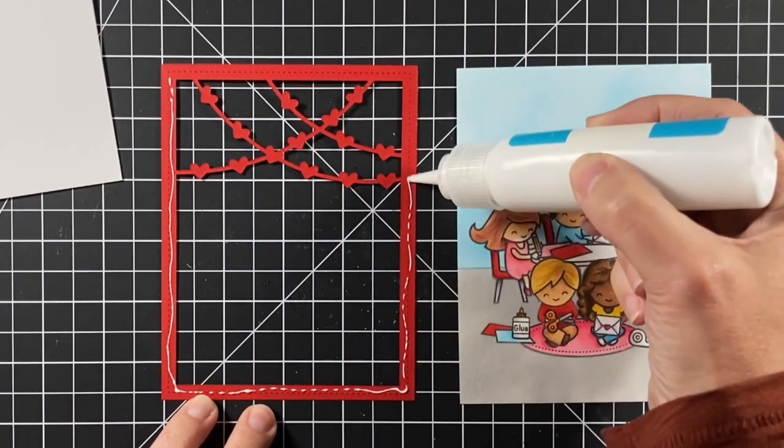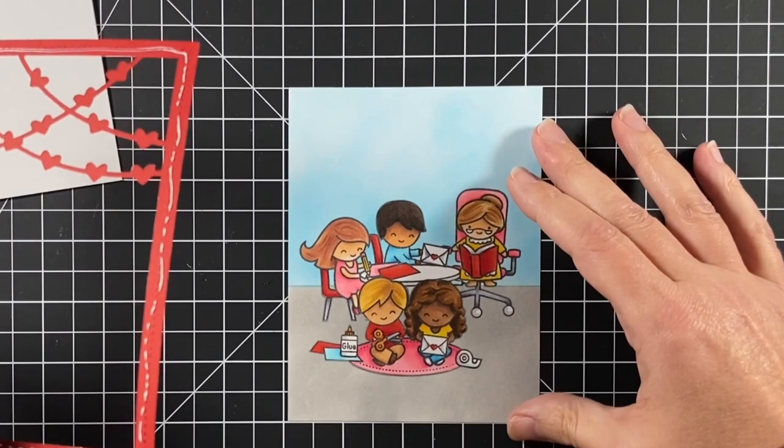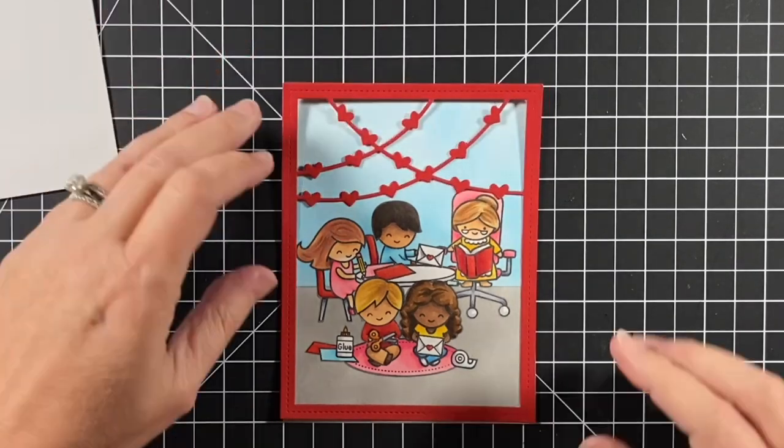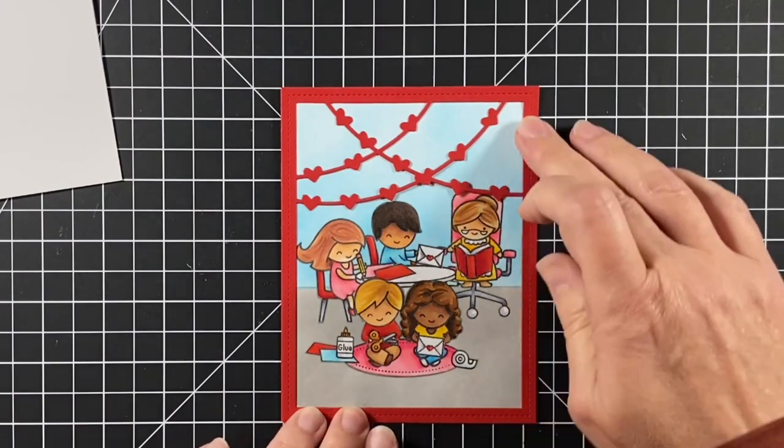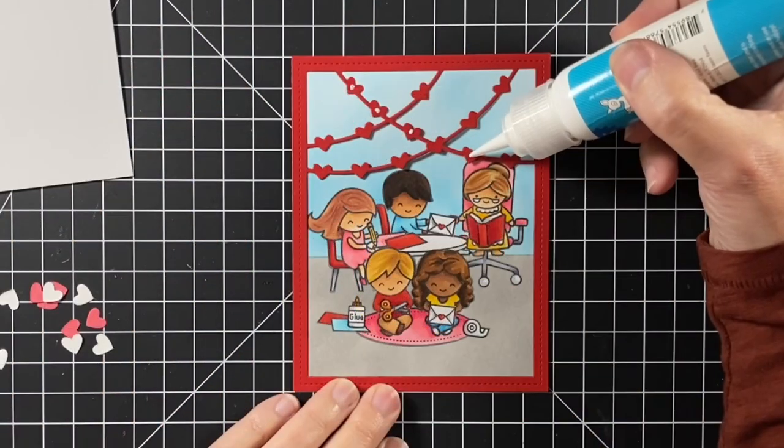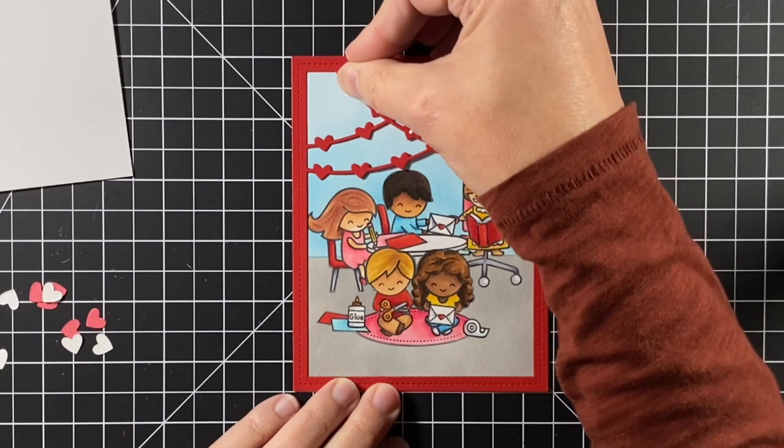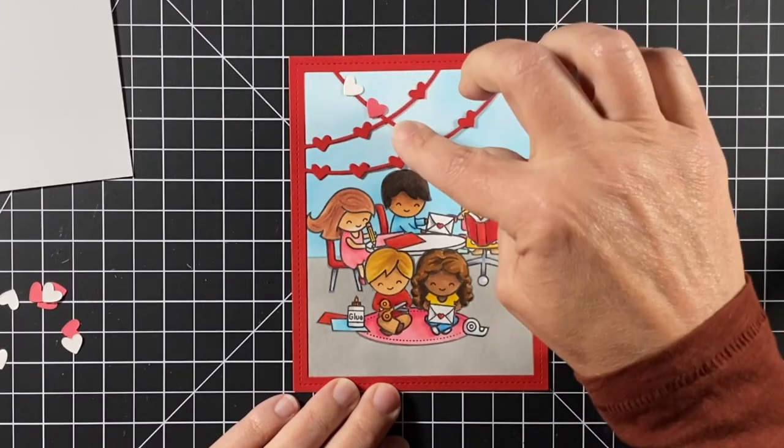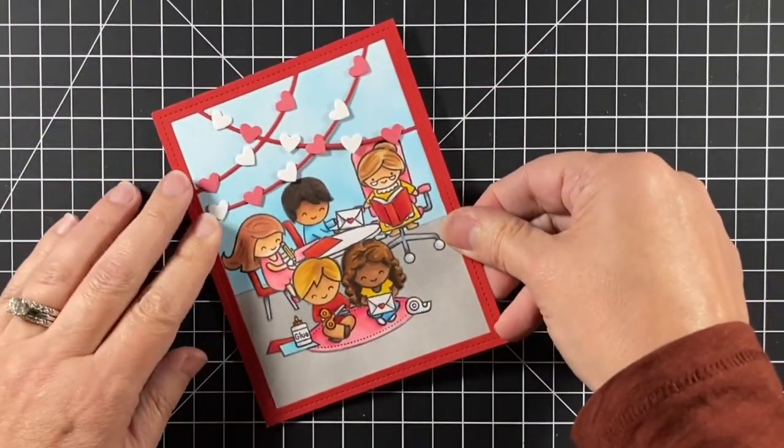Using my jumbo glue tube for that heart garland backdrop, just gluing it all around the rectangle portion. I don't feel like I need any on the hearts at all. I did chop off that quarter inch on the right so they're a little bit more centered. I'm adhering individual hearts onto those heart banners. I'll use my tape runner and adhere this panel to a note card.